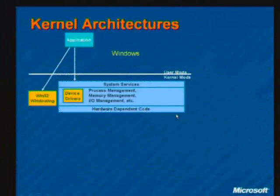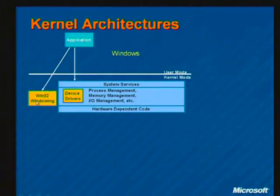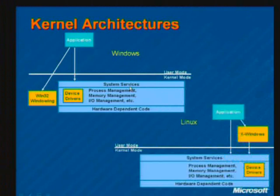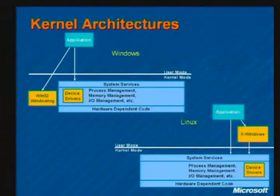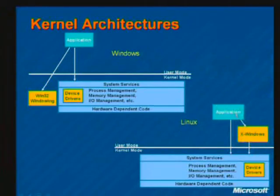In Windows, the core drivers and services execute in their shared address space in the kernel. When an application in user mode wants to perform a graphics operation — draw to the screen, create a window or menu — it makes a call into the kernel's Win32 windowing subsystem. In Linux, when the application makes a windowing call, it sends a message to the X Window process, which looks like any other user-mode process. With the Windows approach there's a simple transition from user mode to kernel mode, whereas with X Windows messages are transmitted, which can degrade performance.